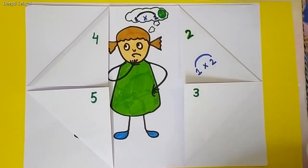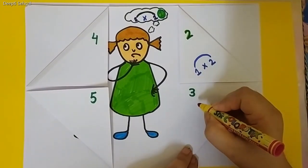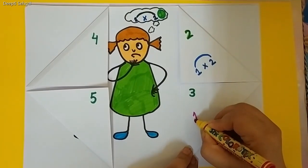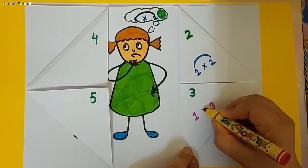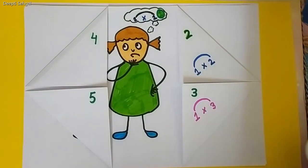Then Chiku went to the third number that is 3 and Chiku drew the rainbow. It was 1 multiply by 3. Again, a single color rainbow. What to do?